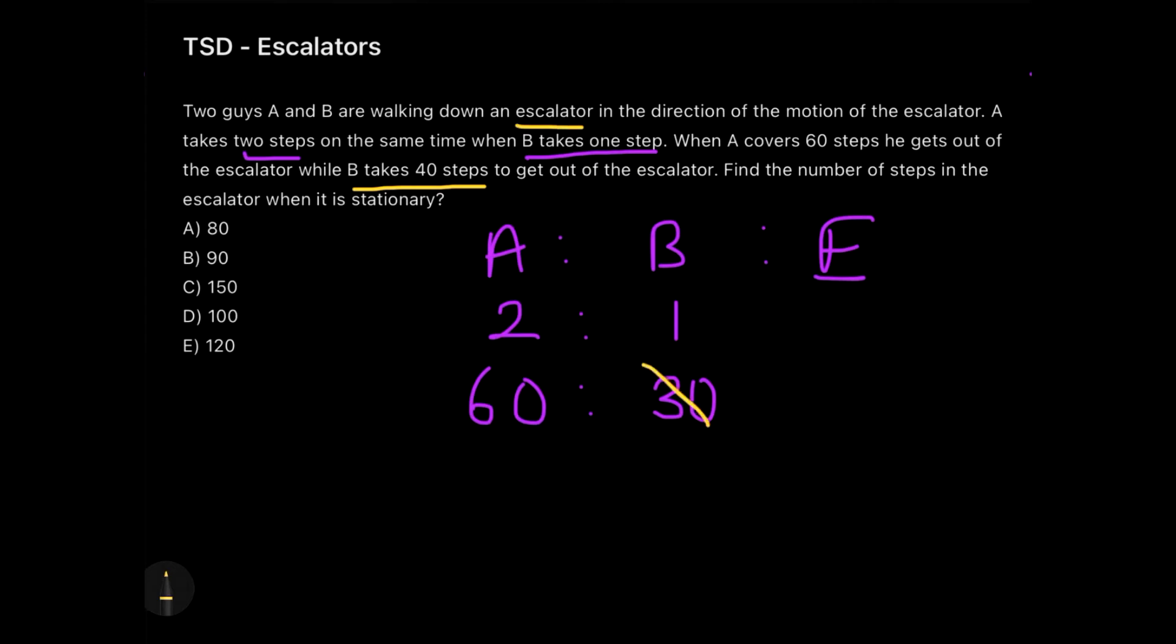Now here is the point when you get to know that we are not blindly following the ratio. There is some change, and what is this change? The change which I mentioned just a minute back—the change in the escalator. Instead of 30, they have given us 40 steps of B. So if B is taking 10 more steps than it was supposed to take, it means that the number of steps in the escalator has changed.